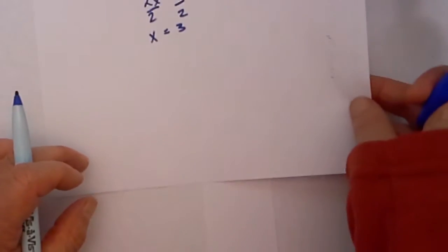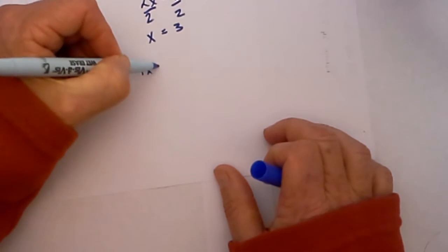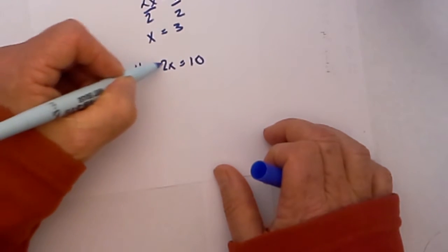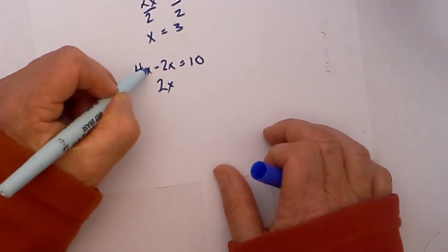I will work one final example just to make sure we have this. 4x minus 2x equals 10, and 4x minus 2x is equal to 2x. Because notice we have like terms, x and x.